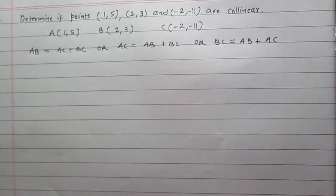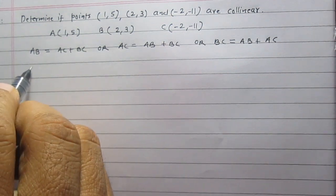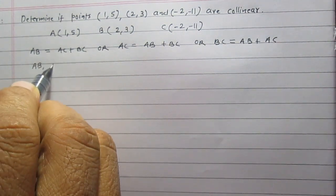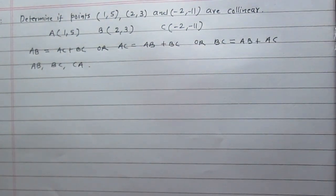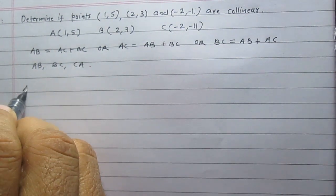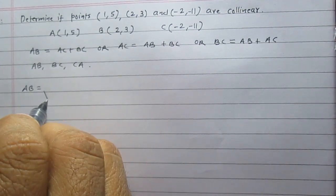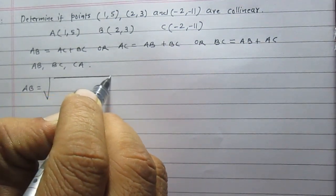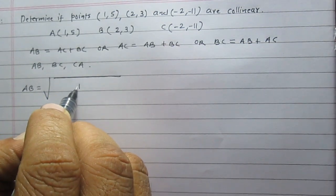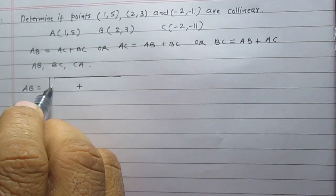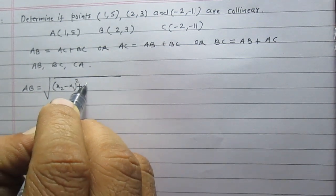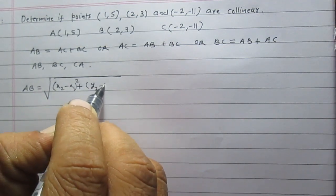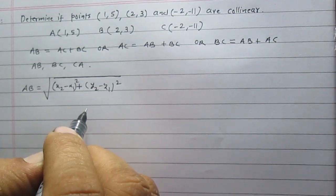In order to find the collinearity of these 3 points, we will first find the distances AB, BC, and CA. Distance AB can be calculated using the distance formula: AB equals the square root of (x2 minus x1) whole square plus (y2 minus y1) whole square.